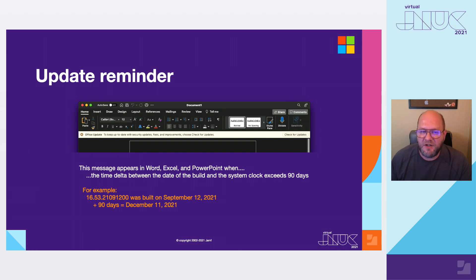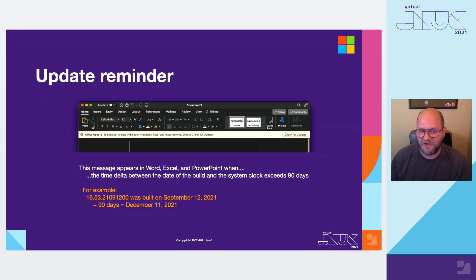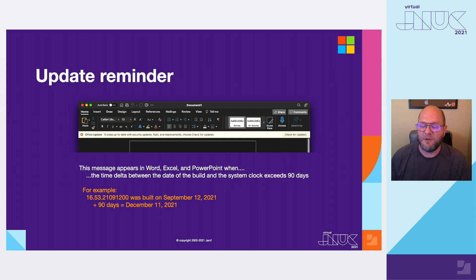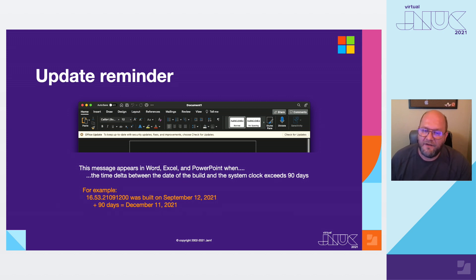We'll also display a reminder to users in Word, Excel, and PowerPoint when the build they're running is older than 90 days. The 90-day age is based on the build time, which forms part of the build number, and the system time. With the help of a date calculator, it becomes fairly easy to predict when the reminder will be displayed. For example, the 16.53 September release had build number 21091200, meaning it was built on September 12th. If you add 90 days, that gets you to December 11th — so if a user is still running 16.53 on December 12th, they're going to see the nag inside Word, Excel, and PowerPoint.